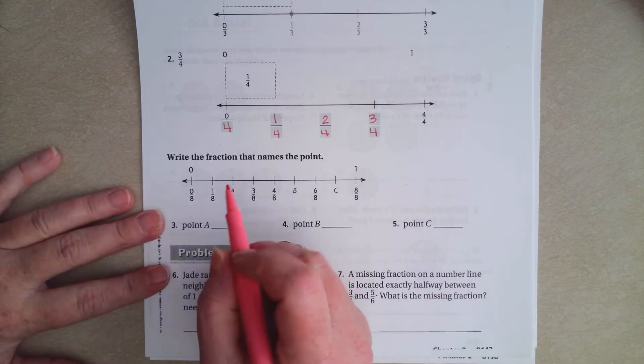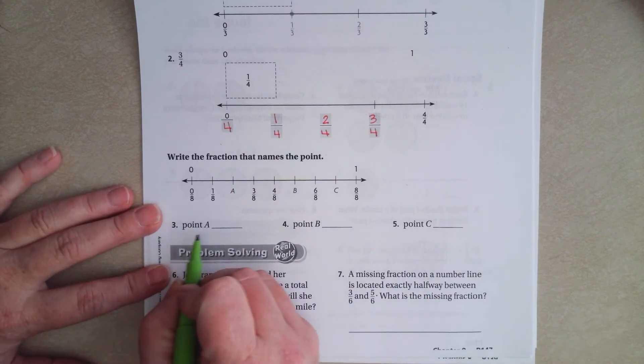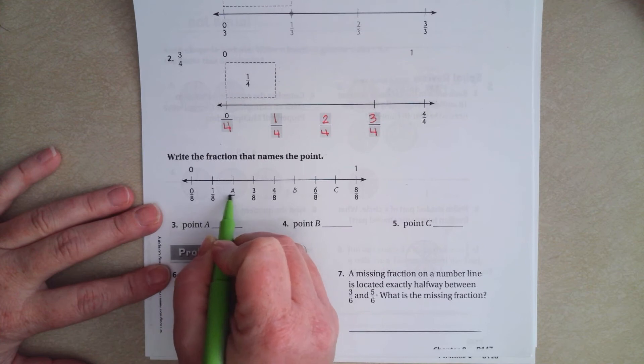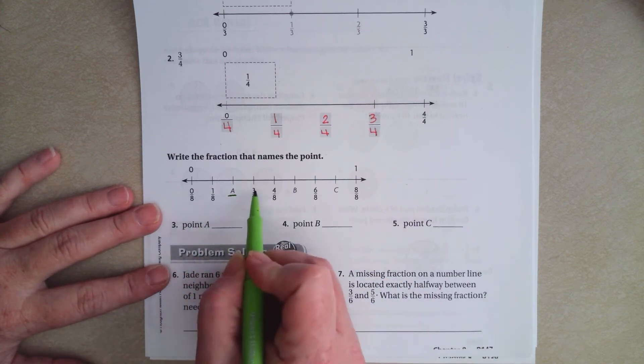So, we're going to write the fraction that names the point. On a, so right here, a. Well, we have 1 eighth and 3 eighths.